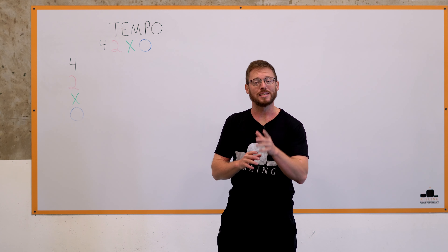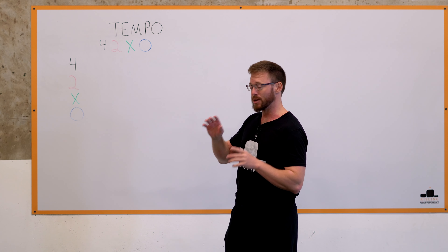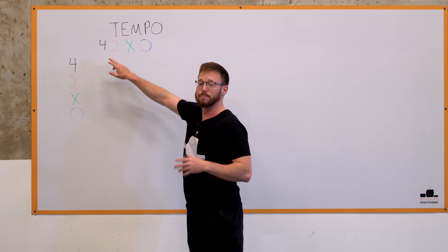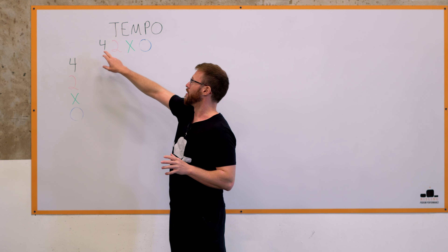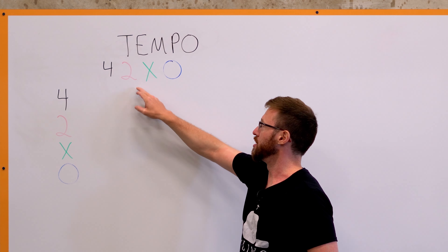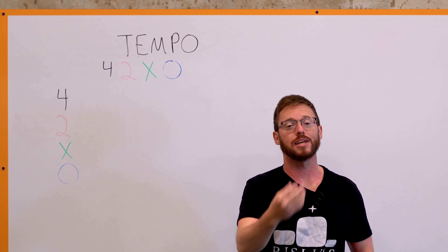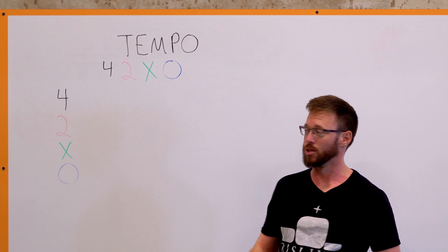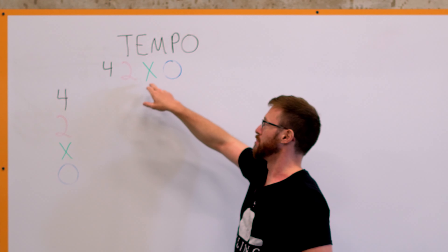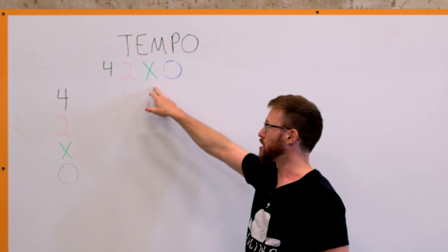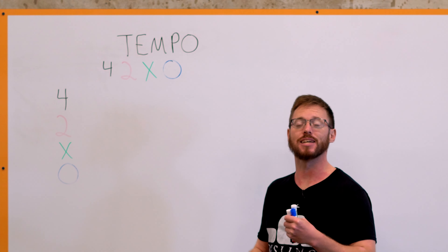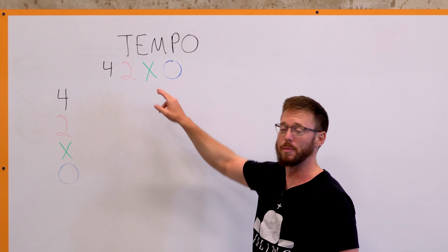Breaking down what tempo is, it's written into four-digit numbers. In the example I'm going to use, we have 4, 2, X, 0. We actually add up these numbers to get what the total time under tension is going to be for a single repetition. In this example it's 4 plus 2 plus X, which is explosive — as fast as possible — plus 0. So you're looking at about 6 seconds of time under tension for a single repetition.